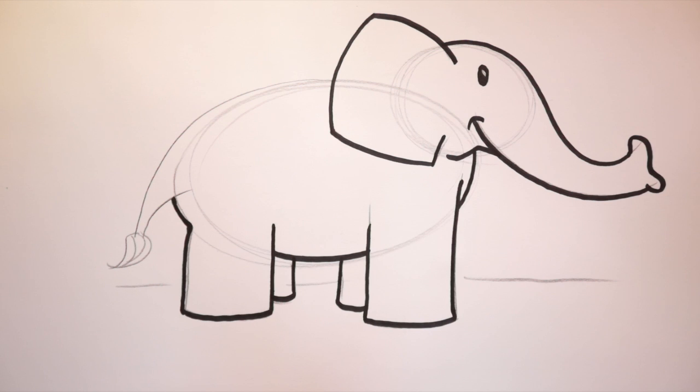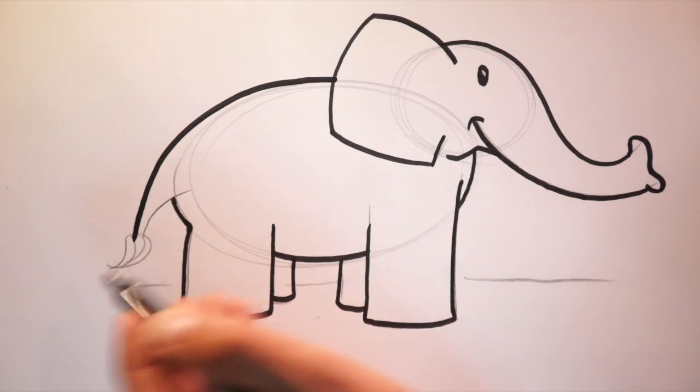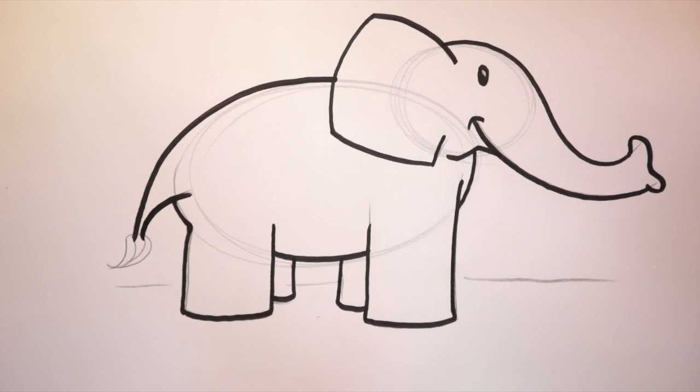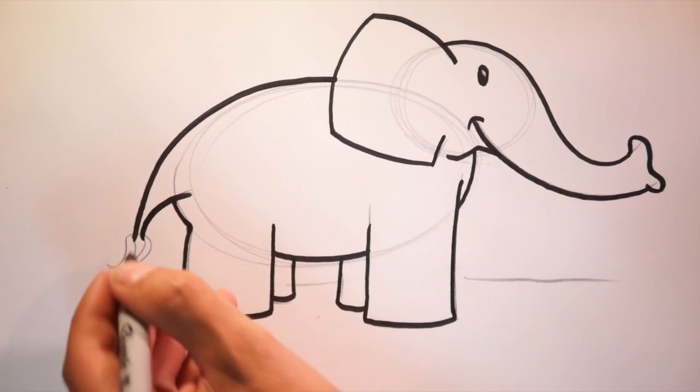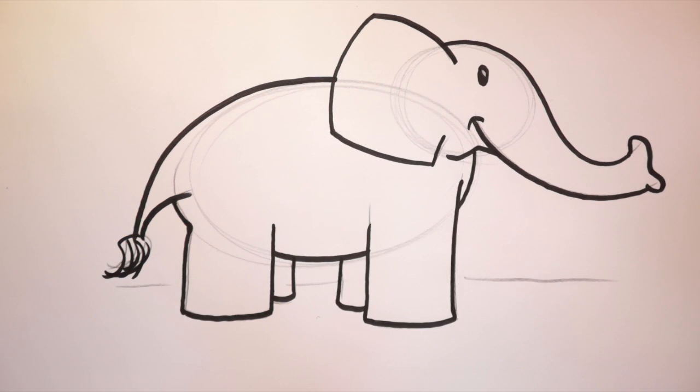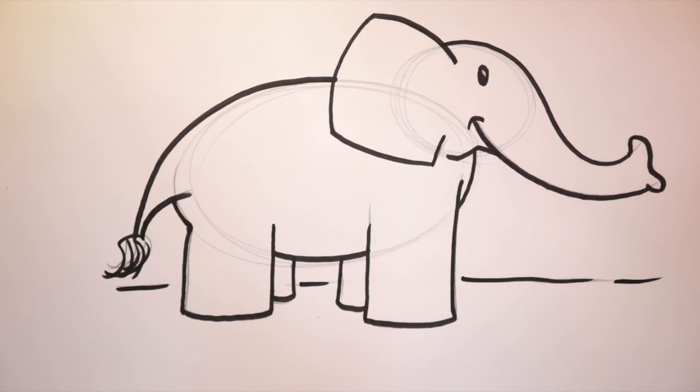Okay. I'm going to follow the contour of the body again. Right down to the tail. Great! Back up towards the body. And those hairs at the end. Let's not forget the ground. Now it's time for some details.